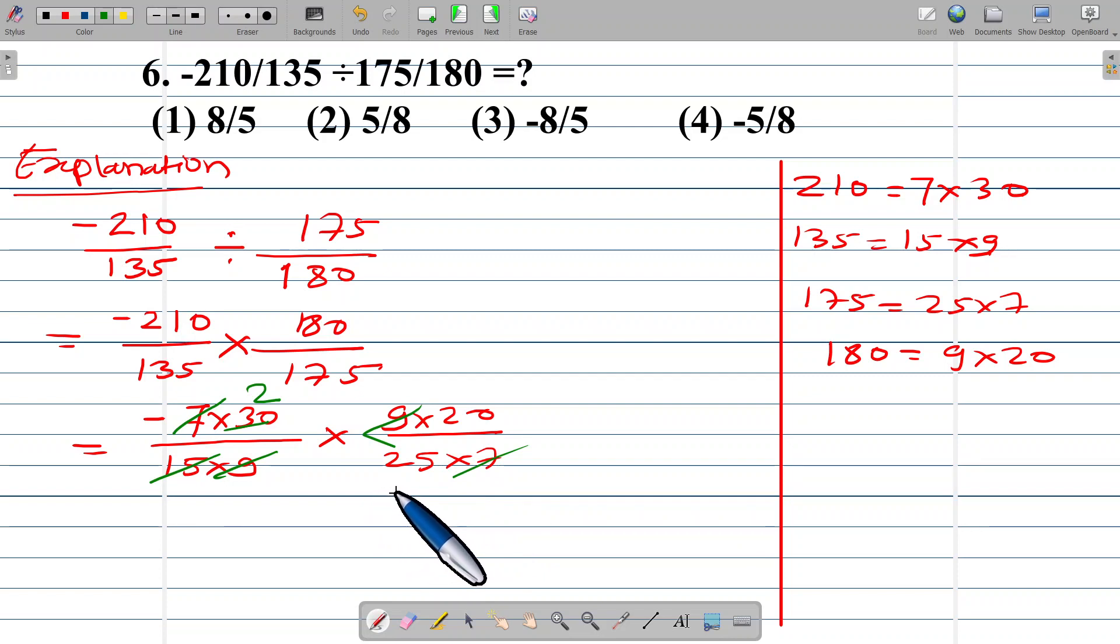Then we get the answer is numerator negative 2 multiplied by 20 upon 25.